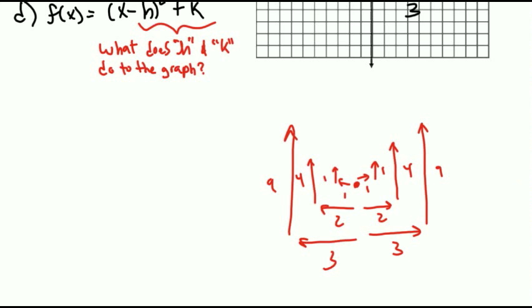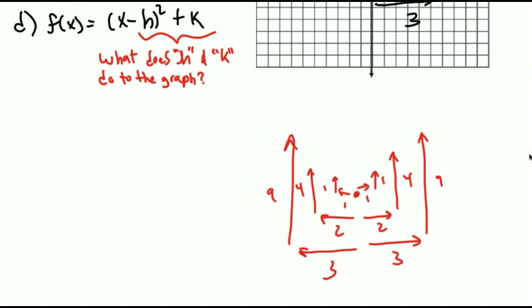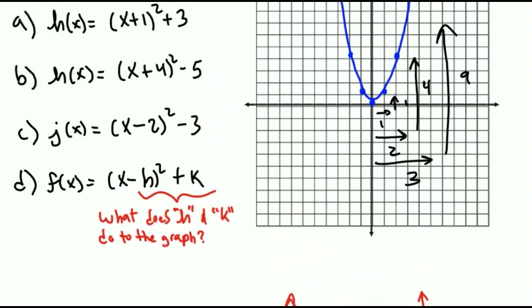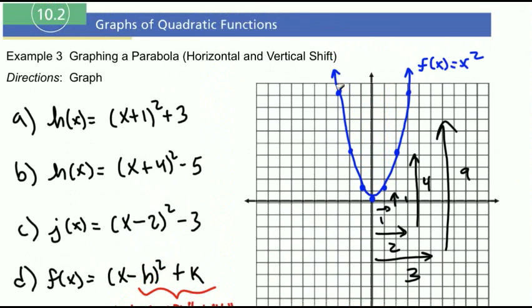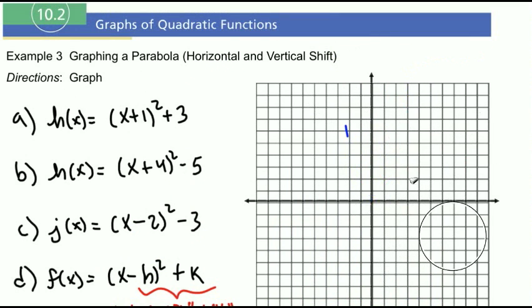And you want to commit that to memory because the way that we're going to graph these guys is by using that pattern. So starting from (0, 0), whatever is inside the parenthesis, this is our horizontal shift, and this is our vertical shift. So I'm going to go to the left 1, up 3. That right there is our vertex, the most important point.